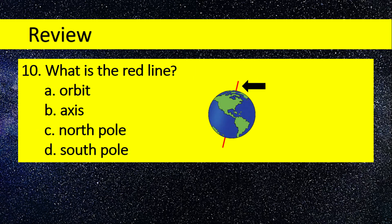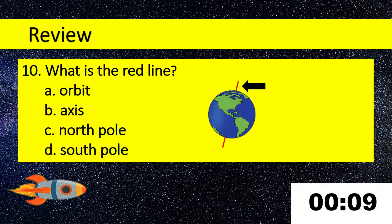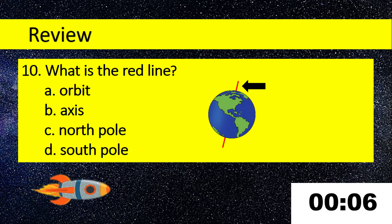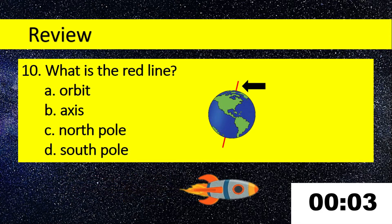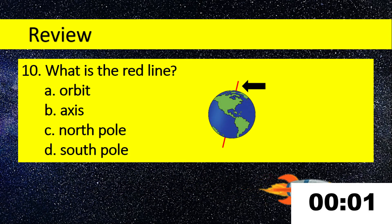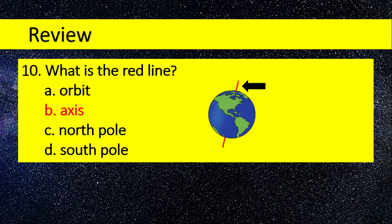Number 10. What is the red line? A. Orbit, B. Axis, C. North Pole, D. South Pole. Answer: Axis.